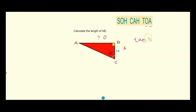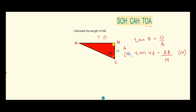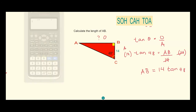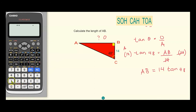Tangent of your angle is equal to opposite side over adjacent side. Substituting the given values: tangent of 48 degrees equals AB over 14. To find AB, we multiply both sides by 14, giving AB equal to 14 times tangent 48 degrees. Using the calculator emulator: 14 times tangent 48, close bracket, equals 15.548.